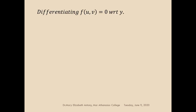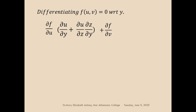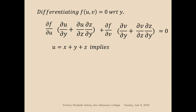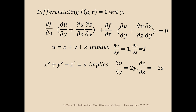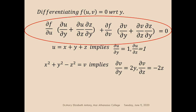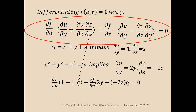Differentiating partially with respect to y: dou f by dou u into dou u by dou y plus dou u by dou z into dou z by dou y plus dou f by dou v into dou v by dou y plus dou v by dou z into dou z by dou y, equal to 0. Since dou u by dou y equals 1 and dou u by dou z equals 1, and from v we get dou v by dou y equals 2y and dou v by dou z equals minus 2z, substituting gives: dou f by dou u into 1 plus q plus dou f by dou v into 2y plus minus 2z into q, equal to 0. This is the second equation, named B.